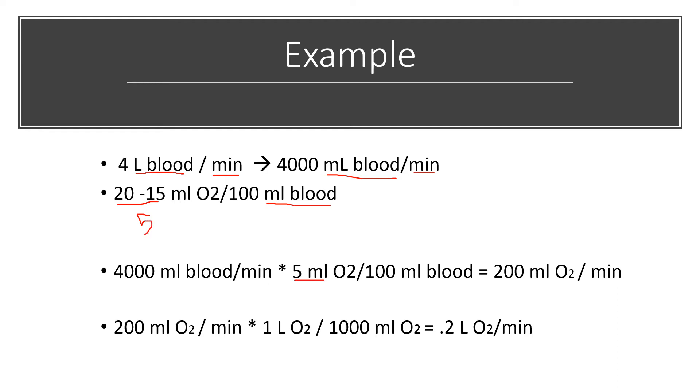After converting 4 liters to 4,000 milliliters, we have 4,000 milliliters of blood. We have milliliters, milliliters, and we're dividing by milliliters of blood. Essentially, we get to cancel these two units out.